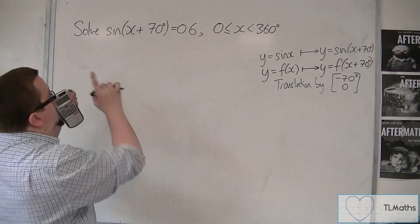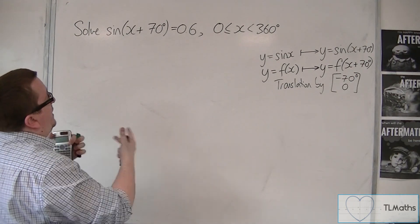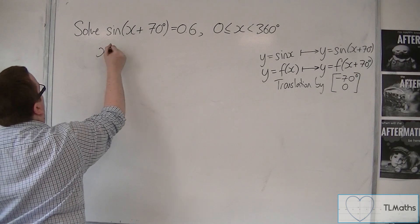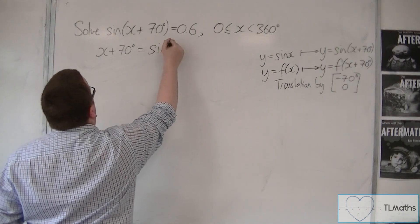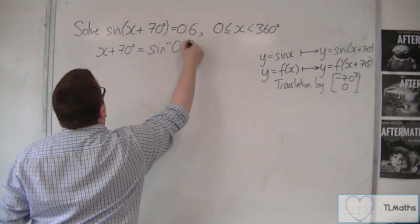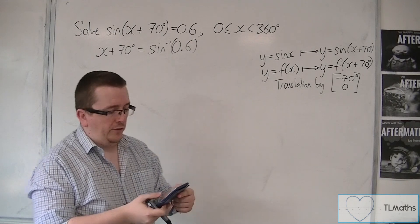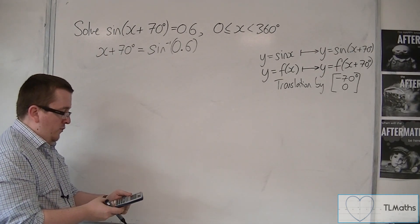So, I'm going to inverse sine. And I effectively, what that means is I inverse sine both sides, which leaves me the x plus 70 degrees, and I inverse sine the 0.6. Now, I make sure my calculator is in degrees to start off with, my calculator is in radians, so shift, mode, and then number 3.